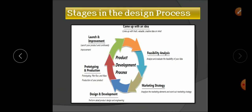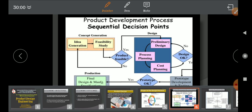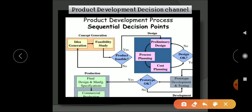The next part covers the product development decision channel. We have already seen the stages of the product development process as sequential decision points. First is concept or idea generation, from which we do a feasibility study. If the idea is feasible we filter it forward; if not, we go back to idea generation. After feasibility study, if the product idea is feasible, the next stage is design, which has three parts.